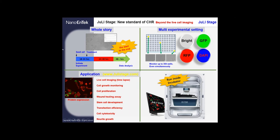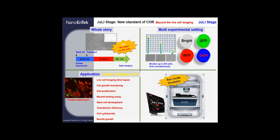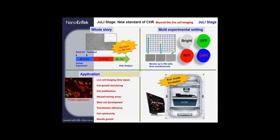Let's see a little more detail about JULiStage. First, it is not about checking the endpoint like microscopic experiments — it is for recording the entire experiment from beginning to end. Secondly, you can set up multiple wells as well as multiple cell positions within one well. If you are using a 96-well plate and set one point in each well, you can get 96 live cell video images at the same time. With three points per well, you can get up to 288 live cell videos simultaneously.